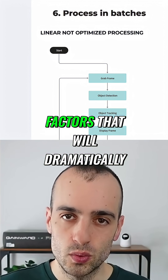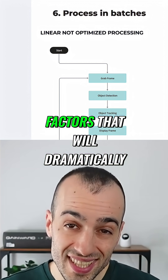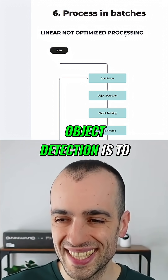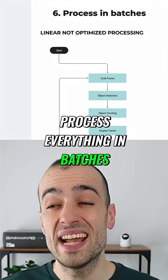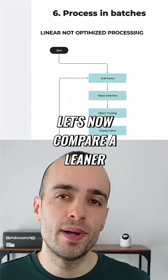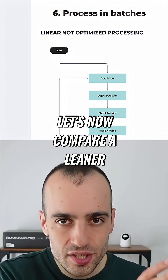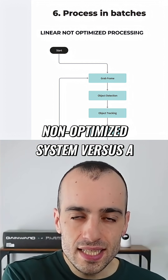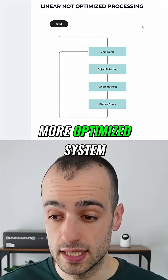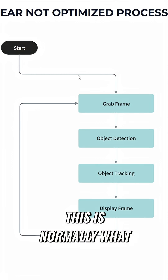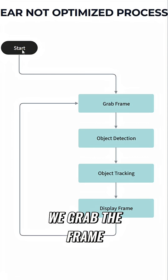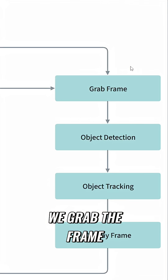One of the main factors that will dramatically increase the speed in object detection is to process everything in batches. Let's now compare a linear non-optimized system versus a more optimized system. This is normally what we have: we grab the frame, we perform object detection.